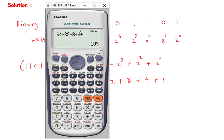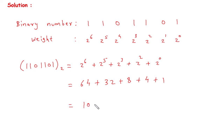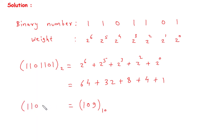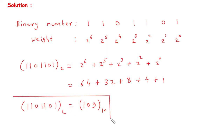So this will be 64 plus 32 plus 8 plus 4 plus 1, which is 109. Now it is in decimal, so we will write base 10. That is why 1101101 binary is equal to 109 decimal.